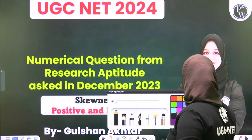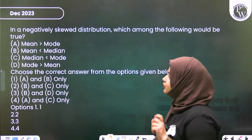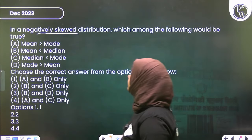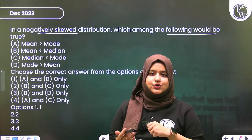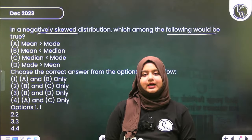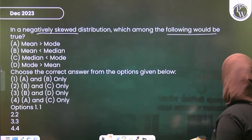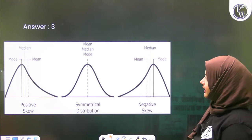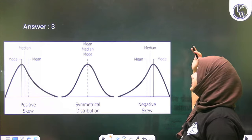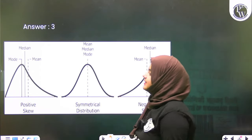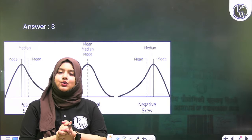I'll clear this concept with a trick and guarantee you won't make mistakes on it in the exam. Let's look at the question. Skewness - positive and negative skewness - is asked frequently in exams. The December question asked about negatively skewed distribution. Before solving, let's understand what negative or positive skewness means.